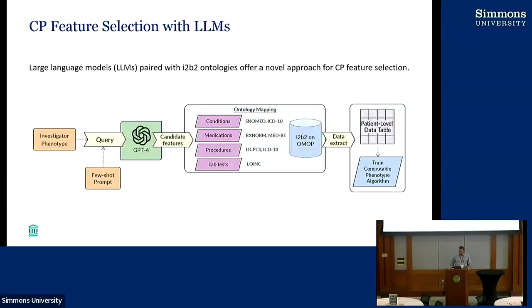What we wanted to do is use large language models for feature selection. The motivation is that sometimes we have a phenotype that is not very well defined — it's not a condition, it's not a fee code, and it might be a newer phenomenon. We thought the large language model is a bit smarter and can do things like agent-based tasks.